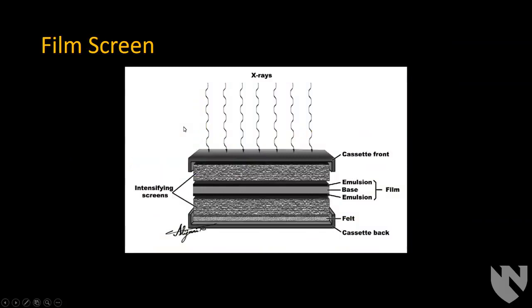Here's an example of what a film screen cassette looks like. The x-rays go through the cassette and hit an intensifying screen, which is a scintillator that turns x-ray energy into visible light energy. There is a film sandwiched between two screens. If the x-rays collide with something in either screen, it creates visible light and exposes the x-ray film in that area.